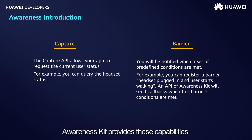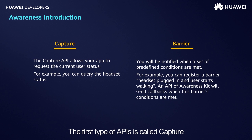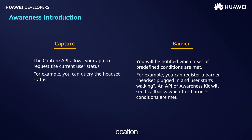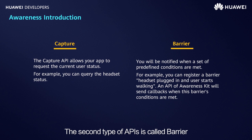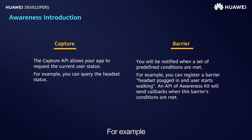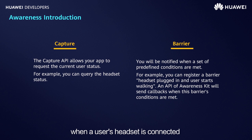Awareness Kit provides these capabilities through two types of APIs. The first type is called Capture. Through these APIs, you can obtain a snapshot of time, location, headset, and weather. For example, Awareness Kit can use a Capture API to tell you whether a user's headset is connected. The second type is called Barrier. You can preset some scenarios for which you want to be notified. For example, you can register a barrier in advance to receive a notification when a user's headset is connected and they start walking.